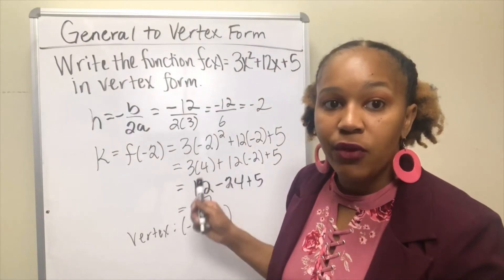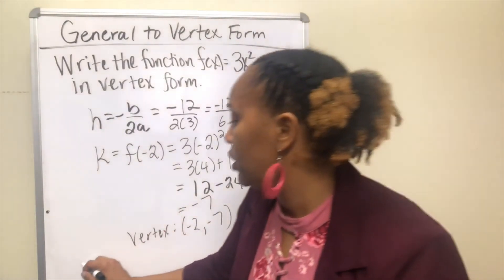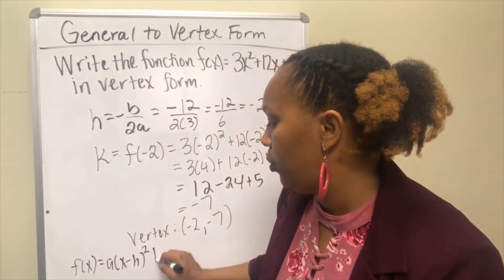So now if you want to take this function and write it in vertex form, recall that your vertex form is f(x) = a(x - h)² + k.